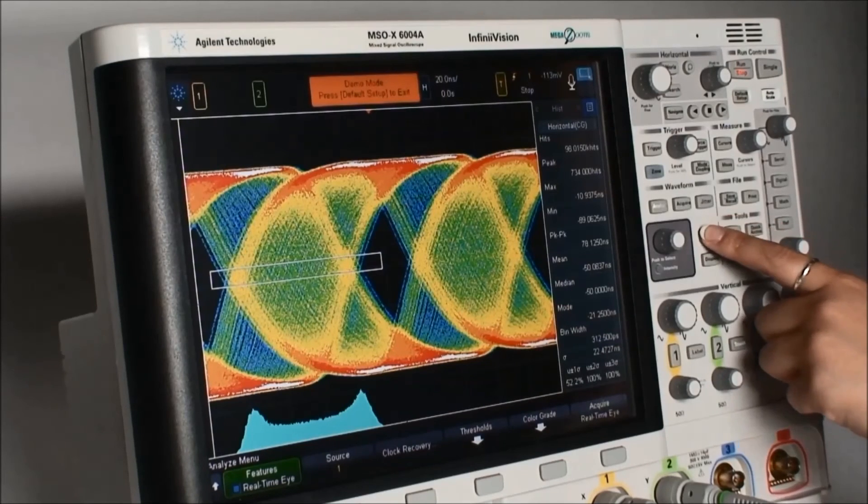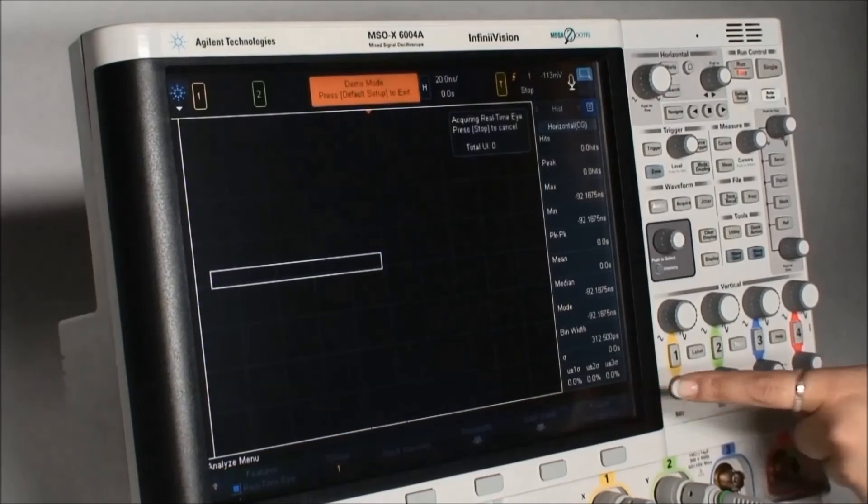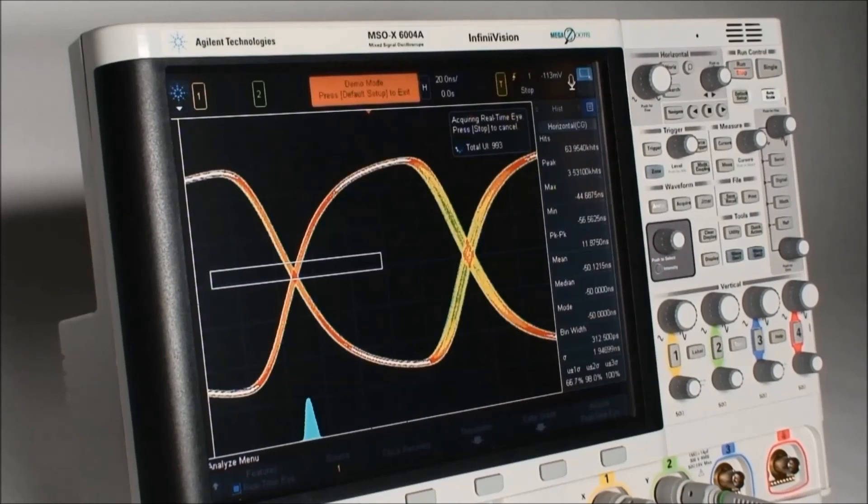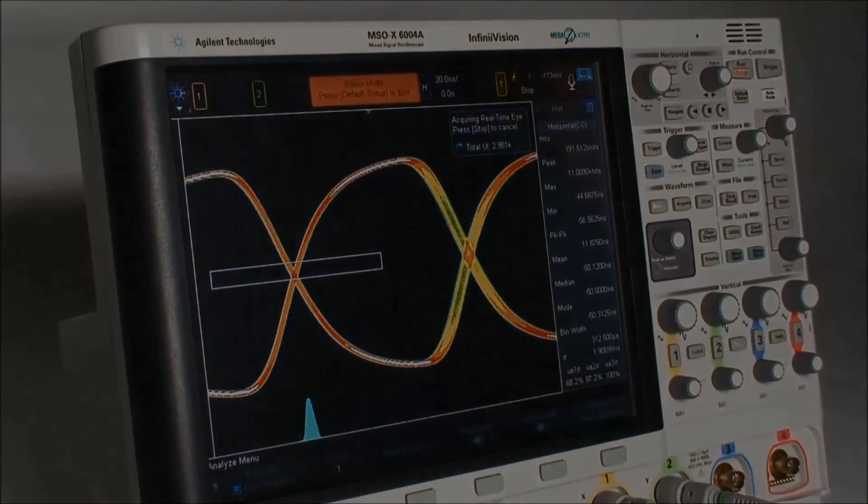Now we will acquire the real-time eye again. As you can see, the eye has opened and is not being affected by the jitter anymore. The histogram has a Gaussian distribution, which also tells us that we have successfully filtered out the jitter.